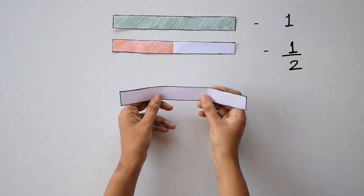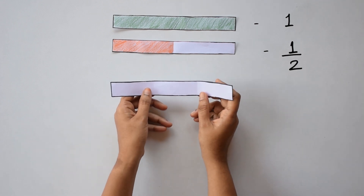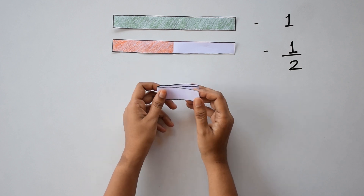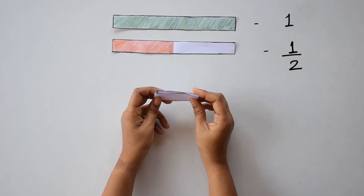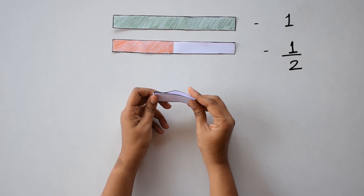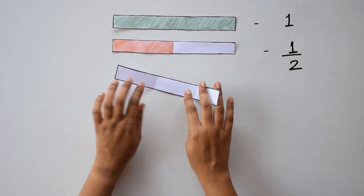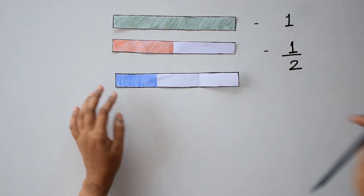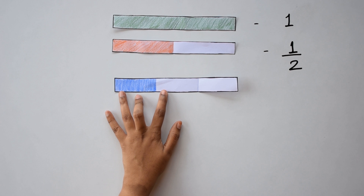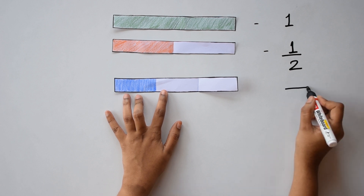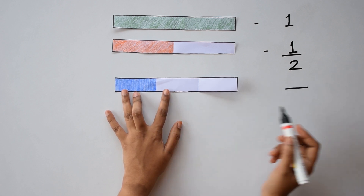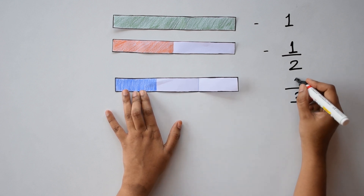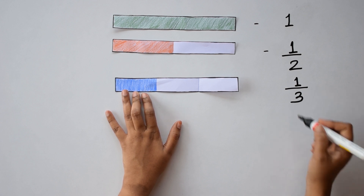Moving on, let's take the next strip. This is a bit tricky, so teachers are advised to help the students. We are going to fold it into three parts — fold it like this and try to make sure that all the parts are equal. Now we have three parts and we are going to shade one part. So what fraction does this shaded part represent? As a convention, we'll always write the denominator first, which is the total number of parts. Here the total number of parts is three and the number of shaded parts is one. So this fraction is one by three or one-third.